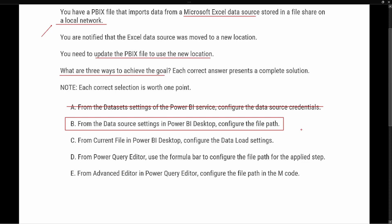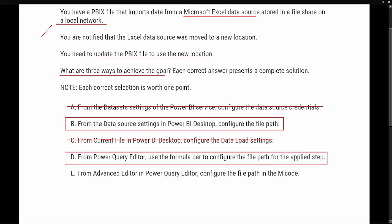Option C says: 'From the current file in the Power BI desktop, configure the data load settings.' We looked at the data load settings and they do not give us the option to modify the file path — only options for detecting relationships, column types, Q&A, and so on. So Option C is not correct. Option D says: 'From the Power Query Editor, use the formula bar to configure the file path' — we did that, so that's correct. Option E says: 'From the Advanced Editor in the Power Query Editor, configure the file path in the M code' — we did that as well.